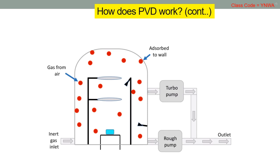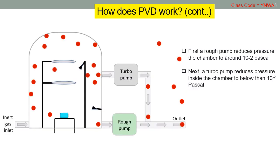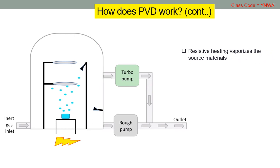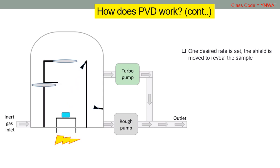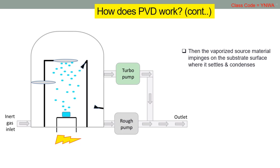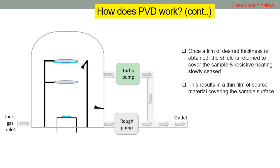Evacuation of the chamber gases is required before the source material can be deposited onto the sample. First, a rough pump reduces pressure in the chamber to around 10⁻² pascal. Next, a turbo pump reduces pressure inside the chamber to below 10⁻² pascal. The stubborn absorbed molecules are then finally removed by the turbo-molecular pump. Resistive heating vaporizes the source material. A quartz sensor is used to set the vaporization rate. Once the desired rate is set, the shield is moved to reveal the sample, and resistive heating vaporizes the source material onto the sample. The vaporized source material impinges on the substrate surface where it settles and condenses. Once a film of desired thickness is obtained, the shield is returned to cover the sample and resistive heating slowly ceased, resulting in a thin film of source material covering the sample surface.